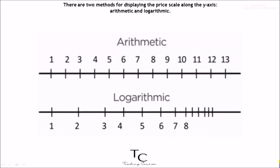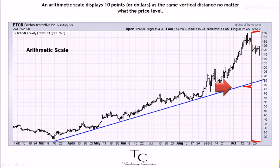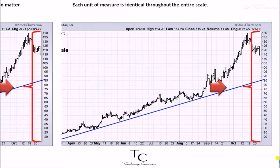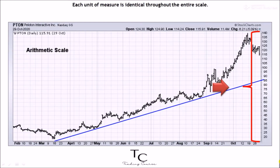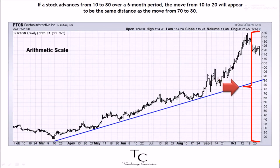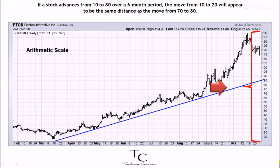There are two methods for displaying the price scale along the y-axis: arithmetic and logarithmic. An arithmetic scale displays 10 points, or dollars, as the same vertical distance no matter what the price level. Each unit of measure is identical throughout the entire scale. If a stock advances from 10 to 80 over a six-month period, the move from 10 to 20 will appear to be the same distance as the move from 70 to 80.